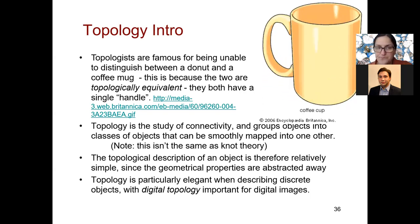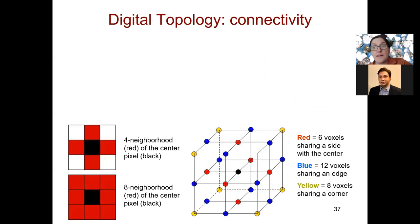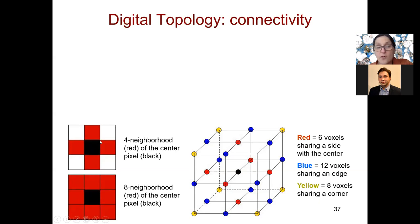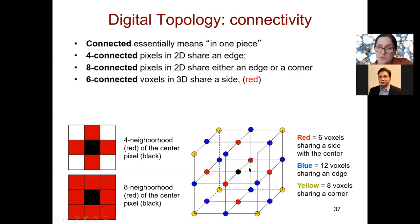To get started, we need to figure out how things are connected in digital space, specifically because they're on a fixed grid. In 2D, a pixel that shares edges with neighbors has four neighbors — that's the four-neighborhood. If we also include those sharing only a corner, we have eight, giving eight-connectivity. In 3D, this goes to six-connectivity for shared faces, and 18-connectivity if we count shared faces and edges.